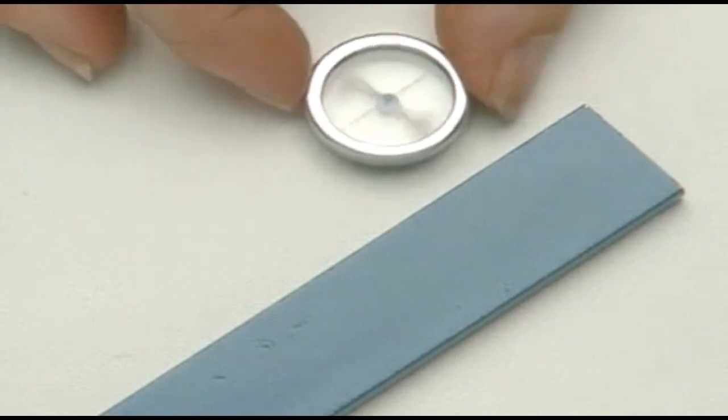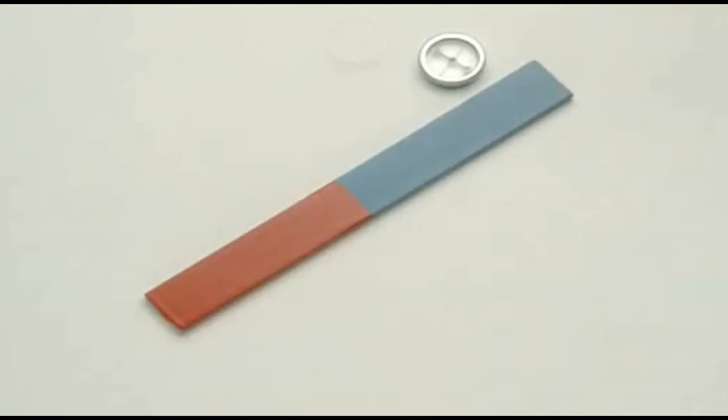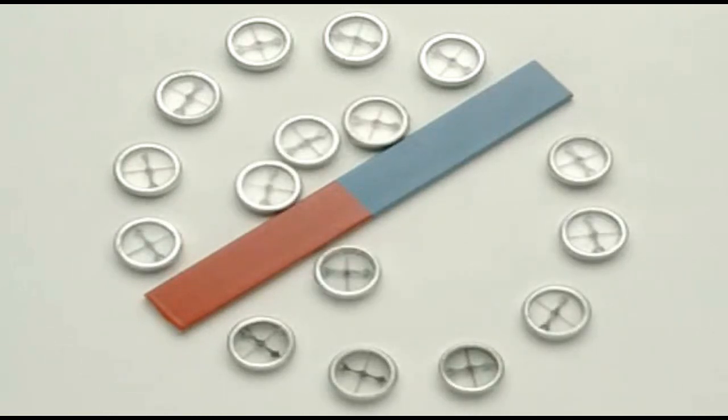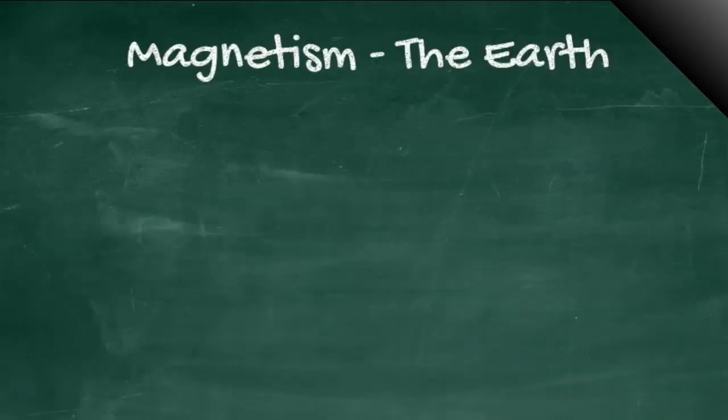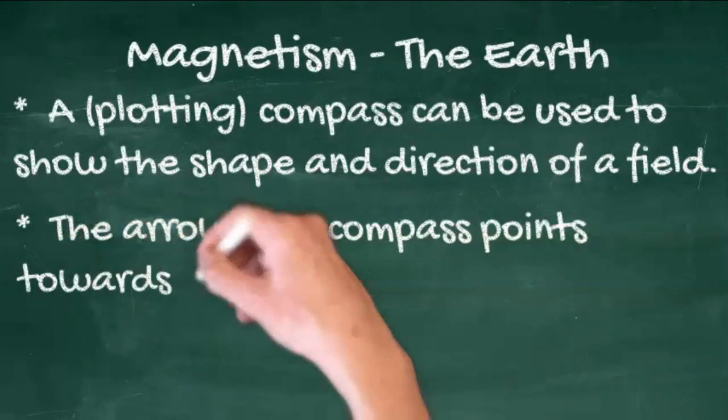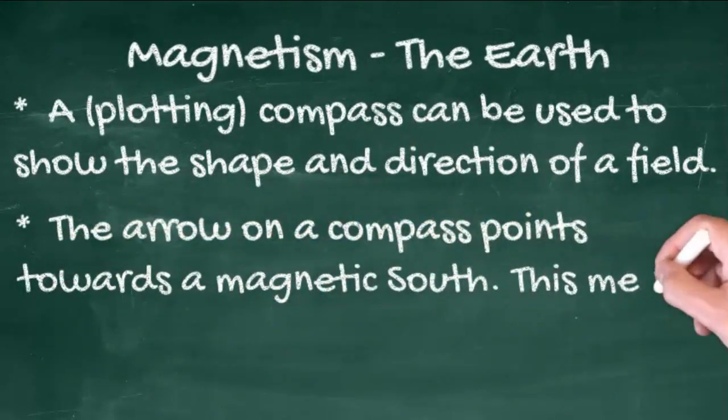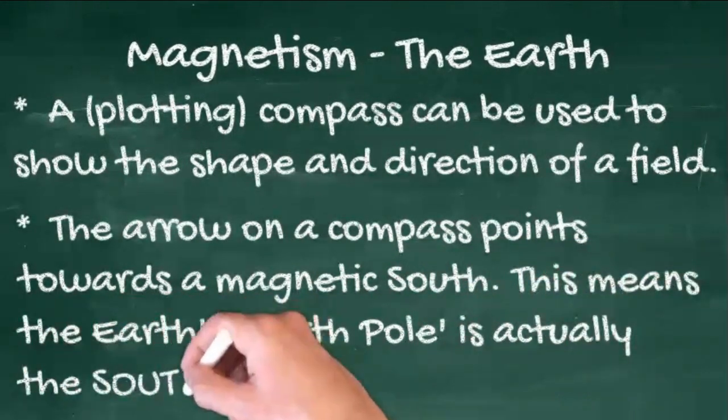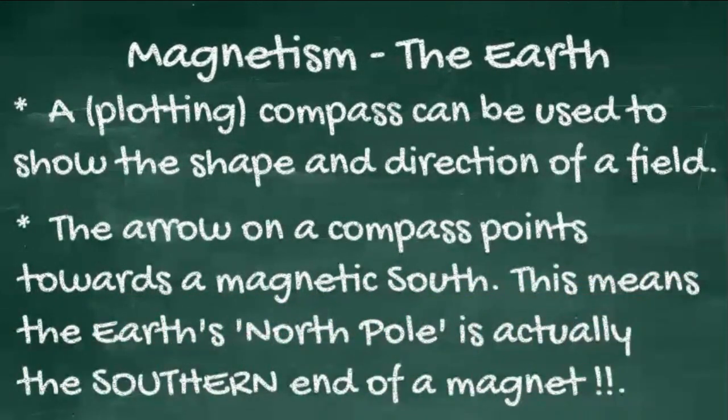Magnetic fields are invisible, but small compasses show up a pattern. Each curved line is a line of magnetic force. The red pointed end of an arrow on a compass points towards a magnetic south. This means the earth's north pole is actually a magnetic south.